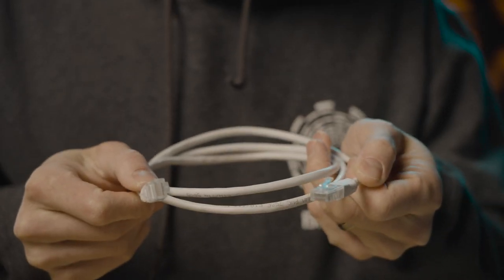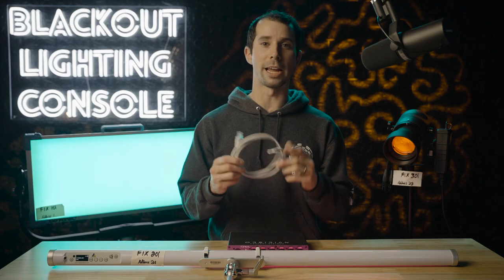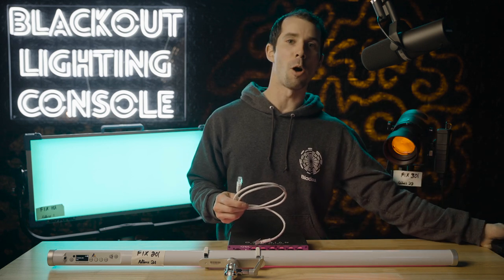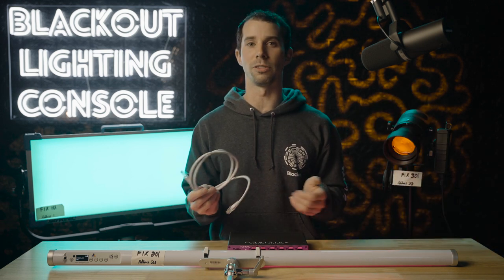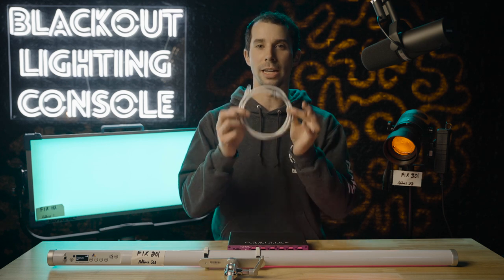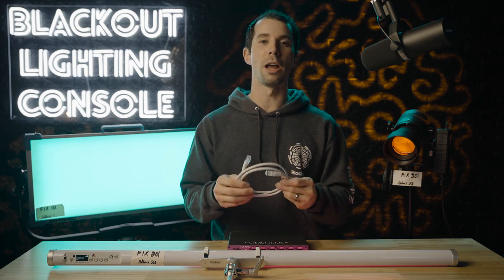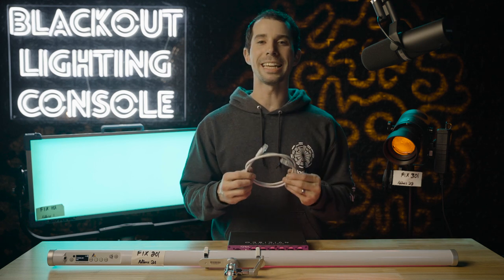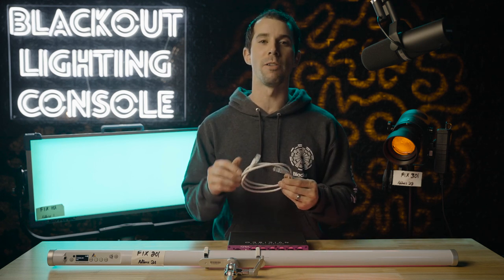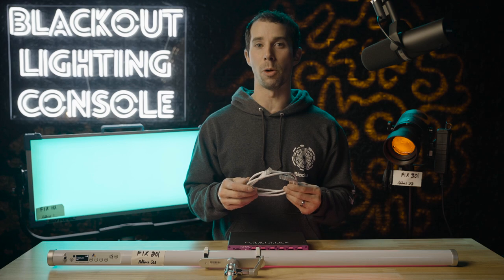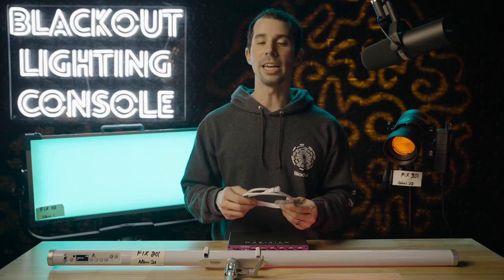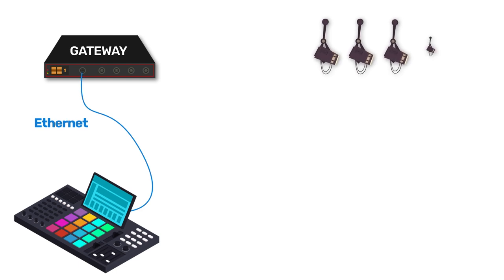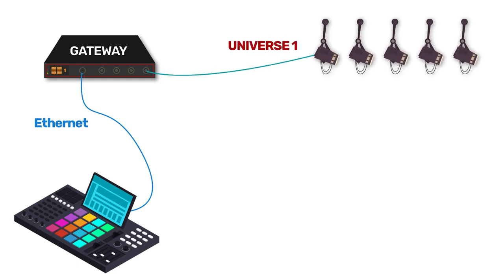If your console doesn't have a DMX output port, like Blackout where the console is literally on an iPad, or you can't fit all of your lights into 512 DMX channels, then you need to run ethernet, which allows you to run multiple lines of DMX through one cable so that each line has 512 new channels available for more lights. Each of these lines is a completely different run of DMX, called a universe.